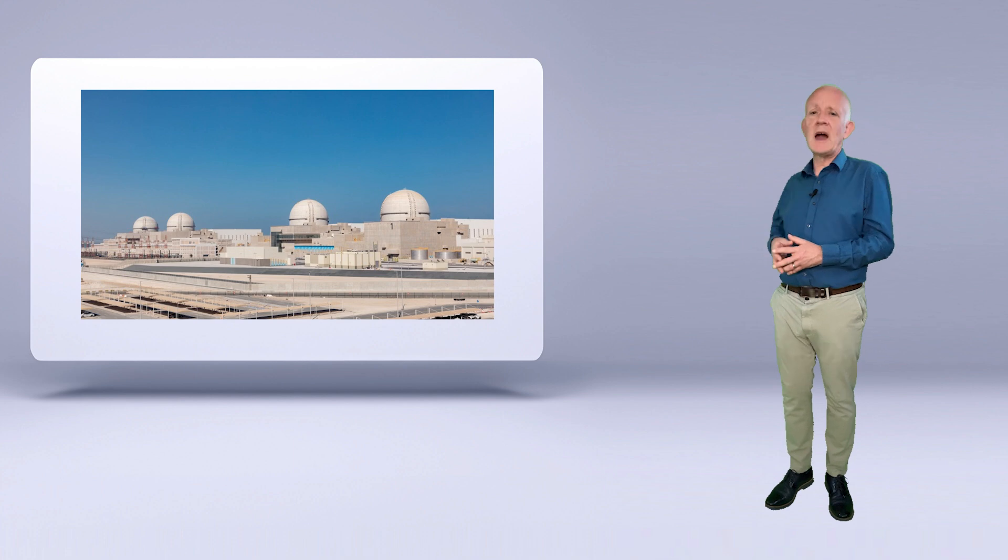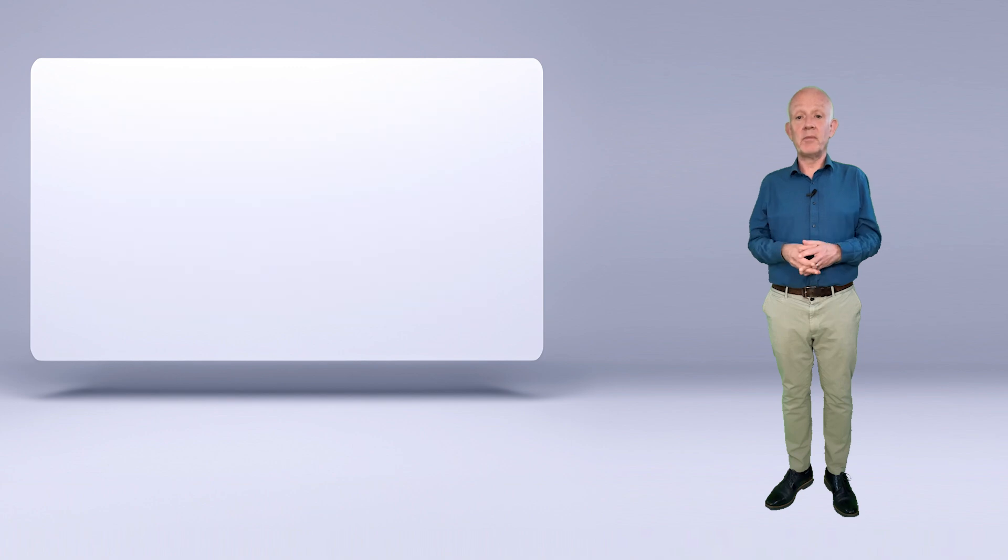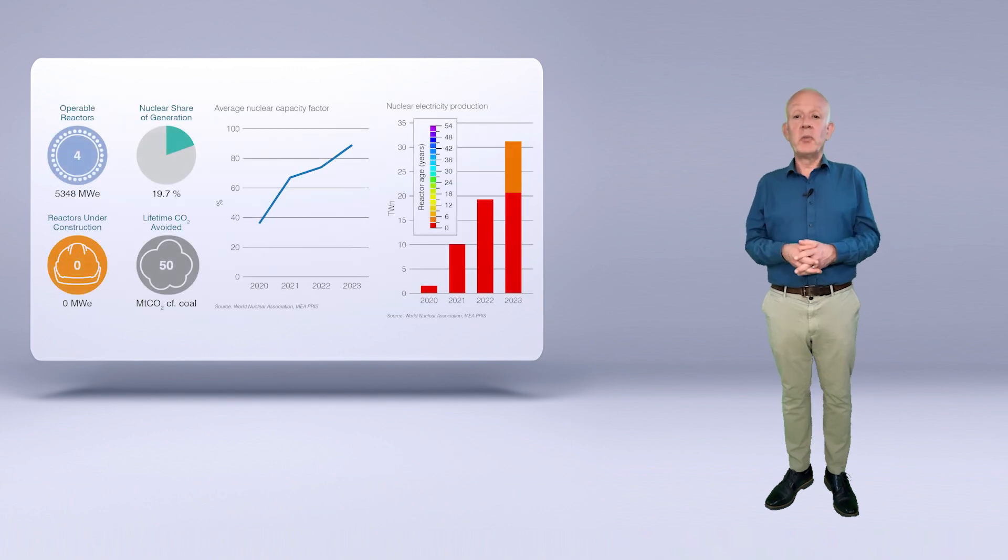The pace at which nuclear can be deployed is illustrated by the United Arab Emirates, where all four reactors at Barakah are now operable. The time for construction is often raised when discussing nuclear's role in decarbonization. However, this overlooks the ability to build reactors in near parallel. The first reactor from the United Arab Emirates took eight years from pouring first concrete to grid connection. It came online in 2020. The next reactor came online just over one year later in 2021, with the third in 2022 and the fourth in March 2024.